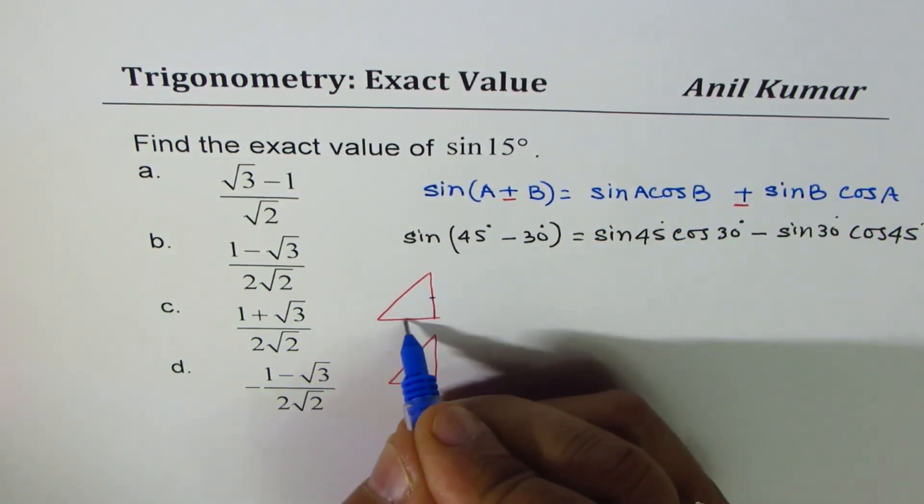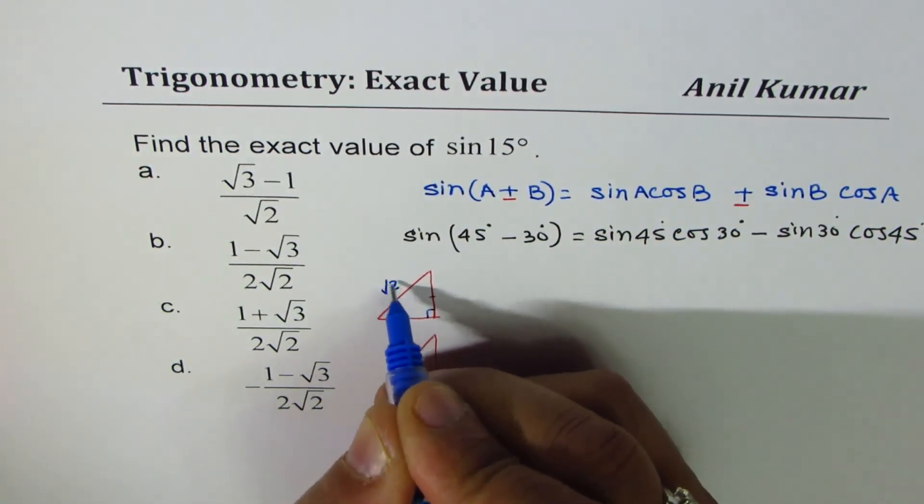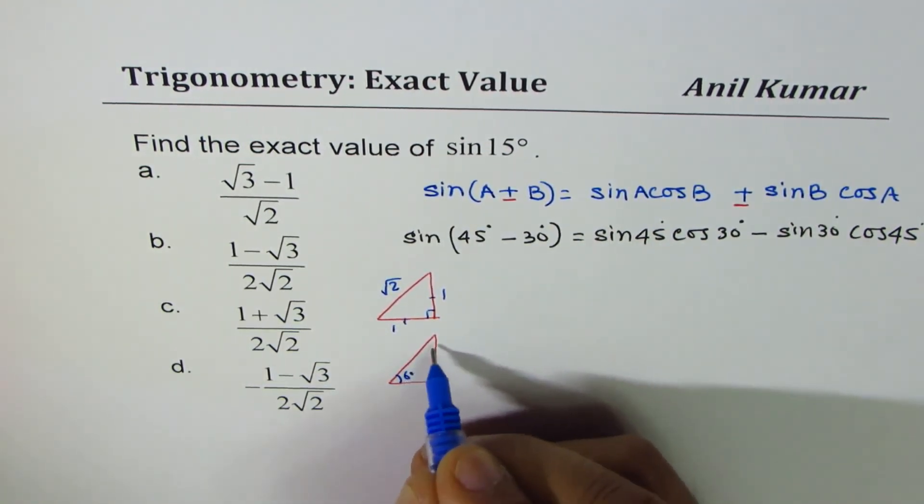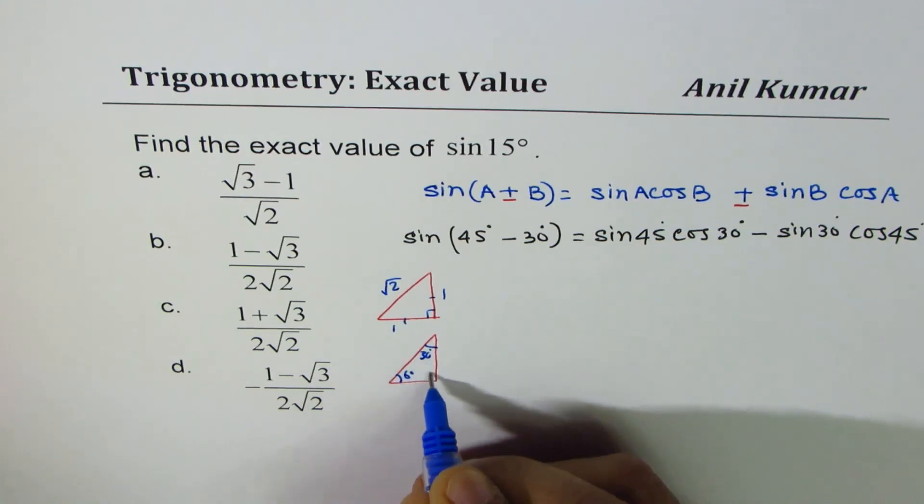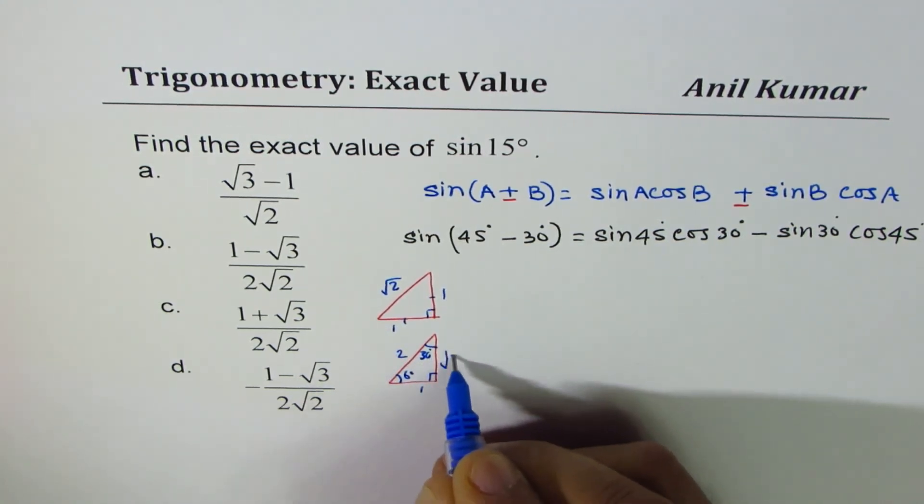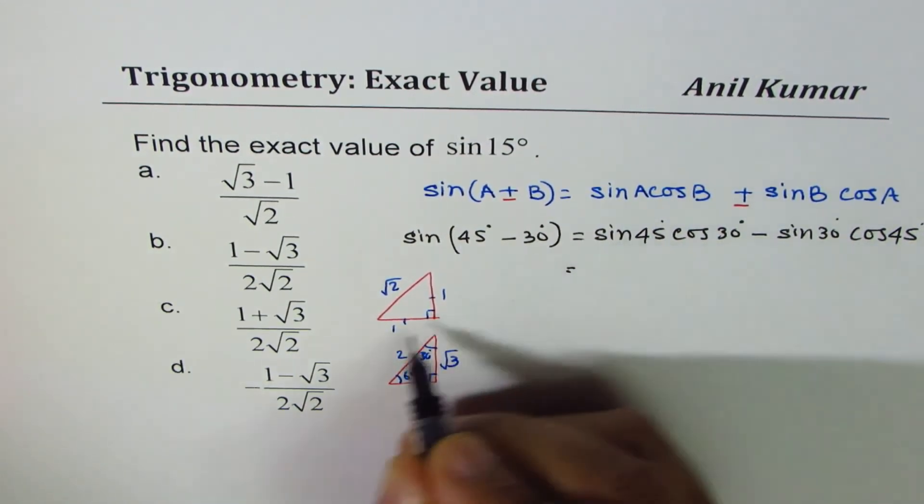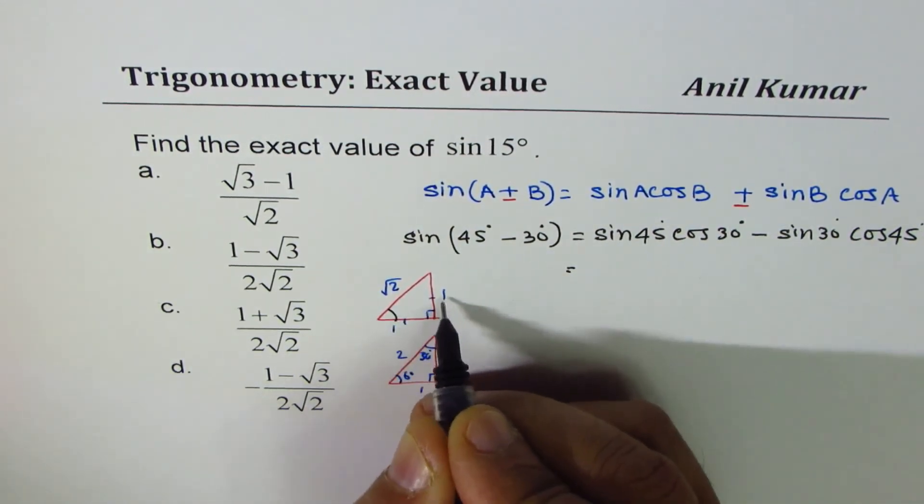Here is the review. We have these two special triangles. If these sides are equal, we're talking about 45, square root 2, 1, 1. And if this is 60, this is 30: 1, 2, square root 3.